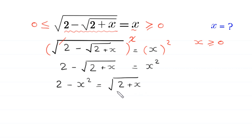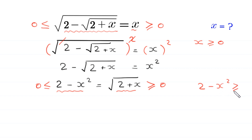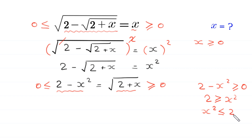Now, this expression at the left hand side, 2 plus x, is under a square root, so this must be greater than or equal to 0. This expression 2 minus x squared must also be greater than or equal to 0. Moving the negative x squared to the right hand side, this becomes 2 must be greater than or equal to x squared, meaning x squared must be less than or equal to 2. So we get two inequalities as the domain: x must be greater than or equal to 0, and x squared must be less than or equal to 2.